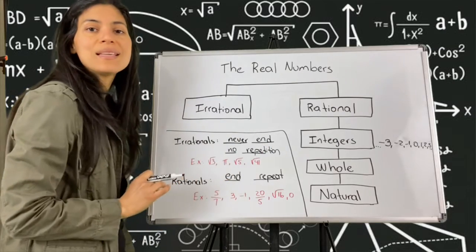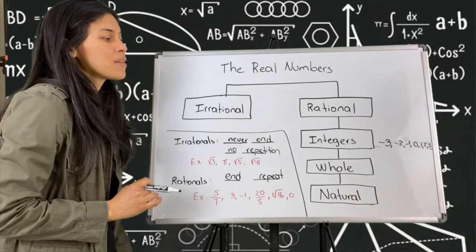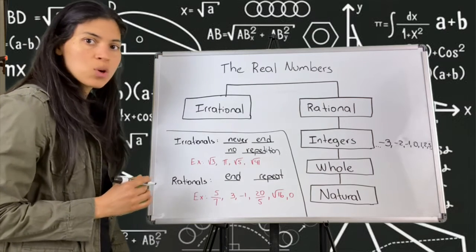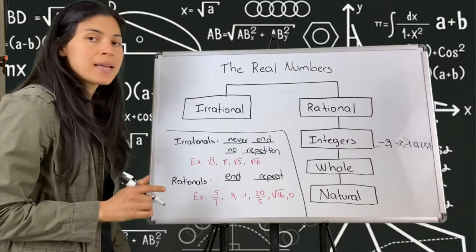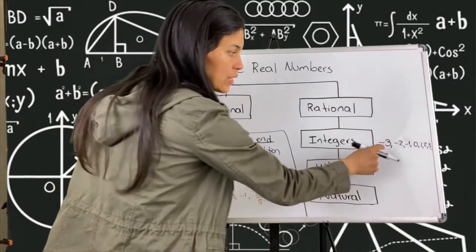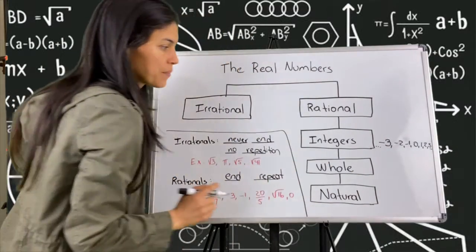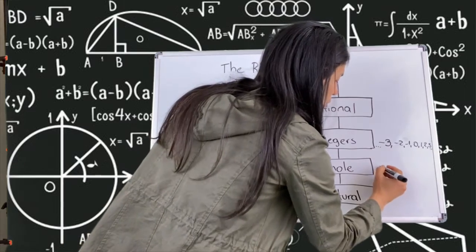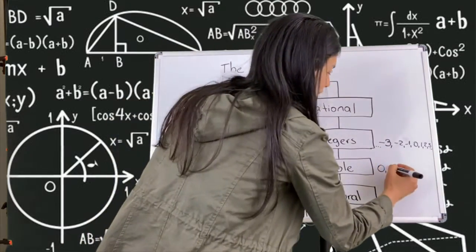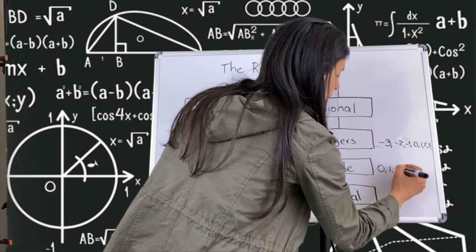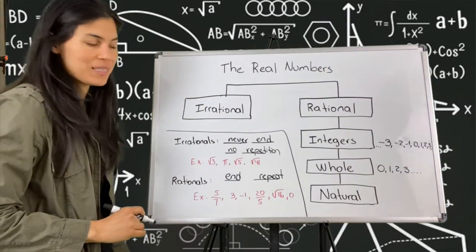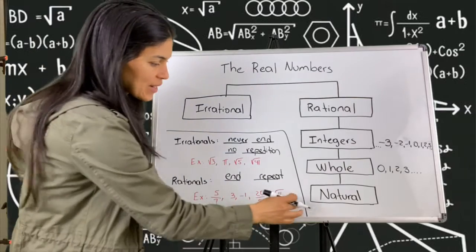Inside the integers we have the whole numbers, which are similar to integers except that whole numbers do not include negative numbers. So whole numbers start on 0: 0, 1, 2, 3, and then go to infinity.